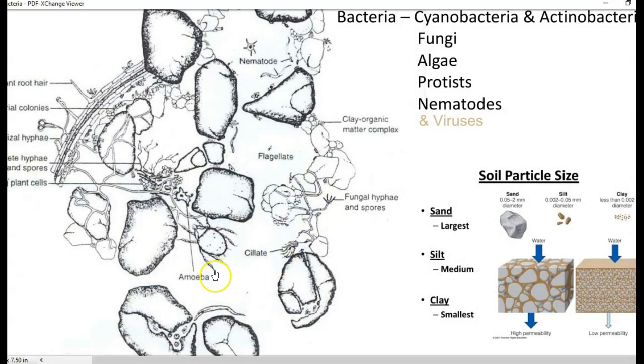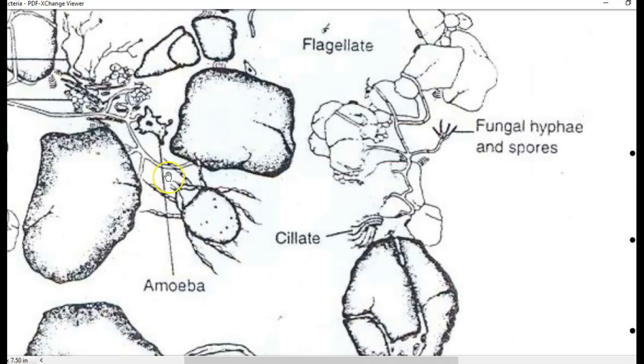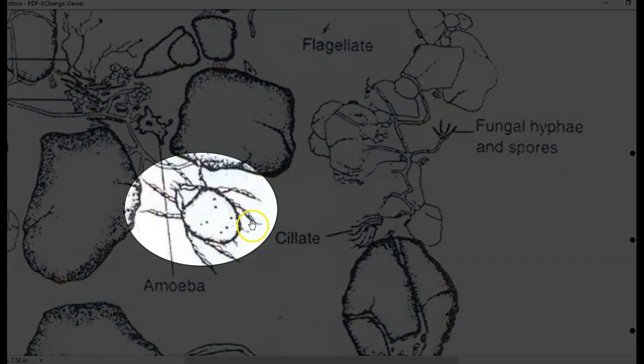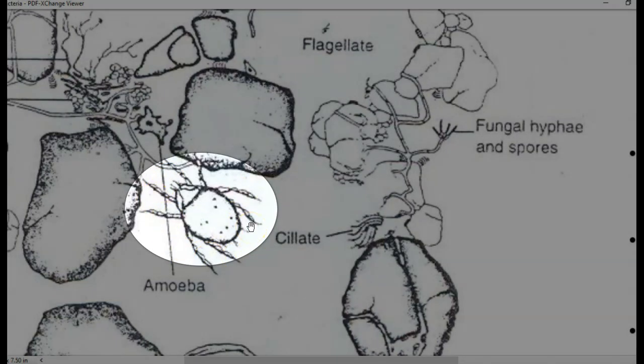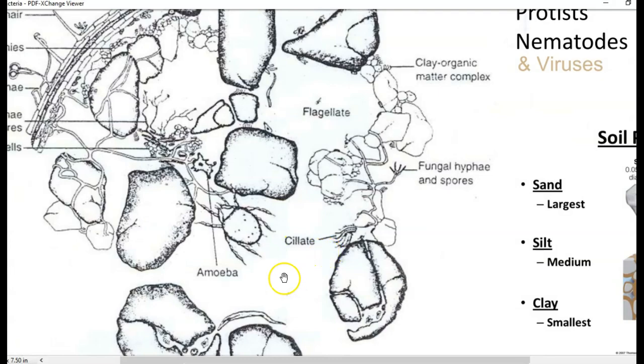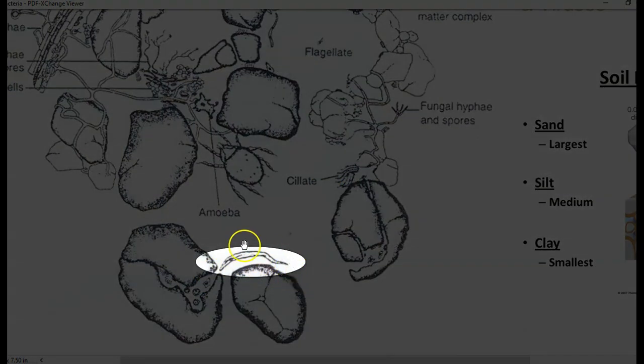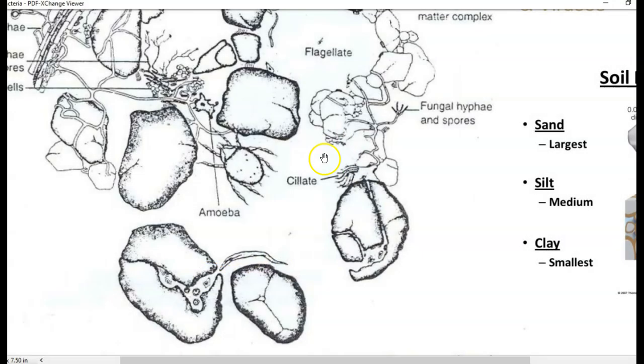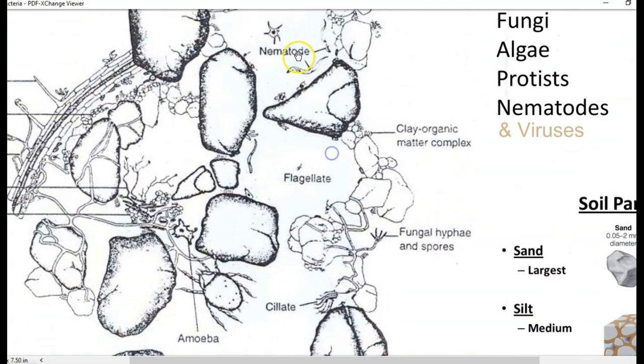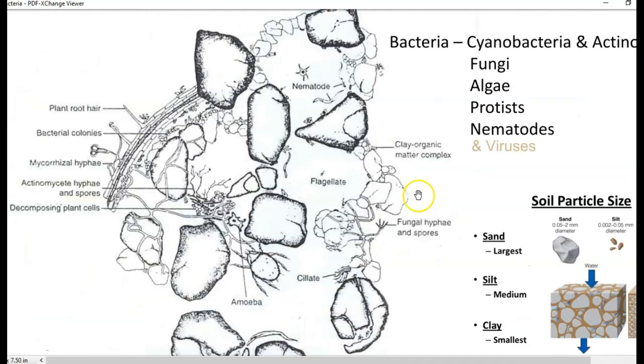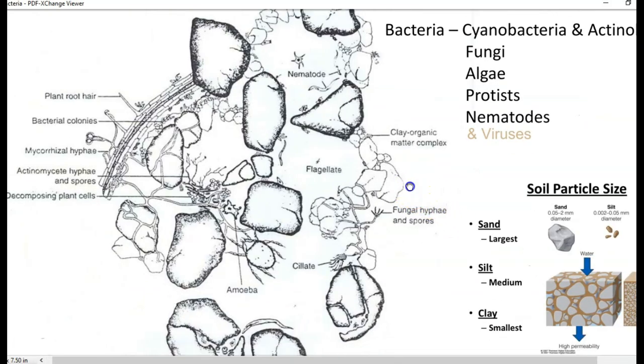Flagellates, ciliates, and amoeba, these all refer to various protozoas present in the soil. You can see a tiny insect also present in the soil called mites. Some kind of mites may also be present. You can see a nematode here and also here. These are the various kinds of microorganisms that can be found in the soil system.